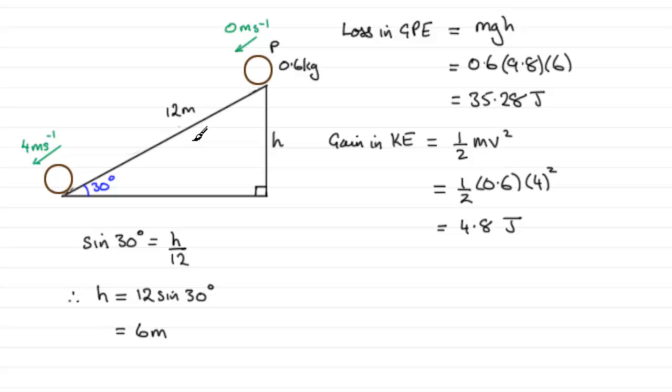So the work done against friction, because it's a rough surface here, the work done against friction is going to be equal to the loss of energy. What is that loss of energy? Well, it's going to be the gravitational potential energy, which was 35.28 joules, minus the gain in kinetic energy, which was 4.8 joules.